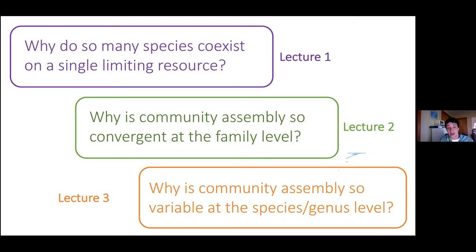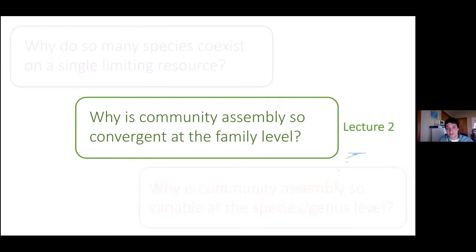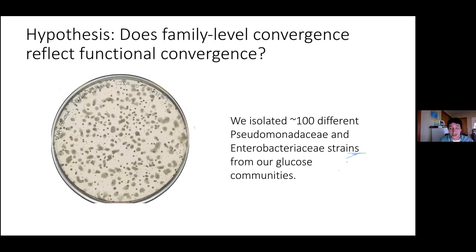Today I want to go through work we've tried to do to understand why we're finding these results — why community assembly is so convergent at the family level. Our first guess is that this reflects some form of functional convergence, matching results showing metagenomic convergence by metabolic function. To test that idea, we took 13 or 14 communities assembled in glucose as the only carbon source.